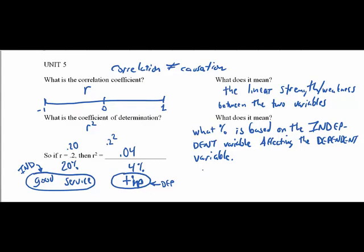So, what this means is that 4% of the tip, this is the dependent variable, was affected by the good service. And that is how you explain the coefficient of determination.